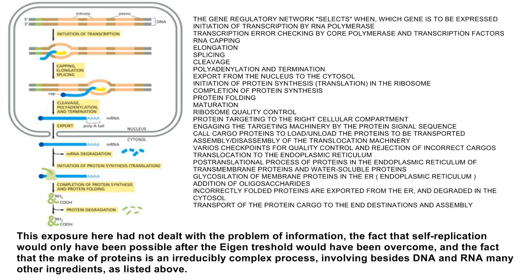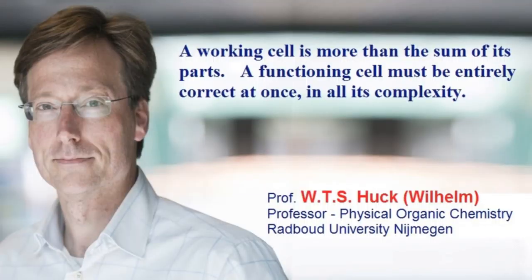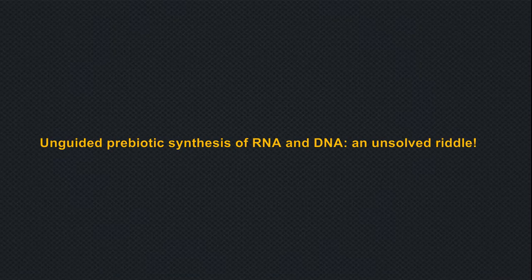In this video we have not dealt with the problem of information, the fact that self-replication would only have been possible after the Eigen threshold would have been overcome, and the fact that the making of proteins is an irreducibly complex process involving, besides DNA and RNA, many other ingredients. A working cell is more than the sum of its parts — a functioning cell must be entirely correct at once in all its complexity. Unguided prebiotic synthesis of RNA and DNA remains an unsolved riddle.